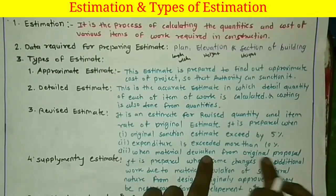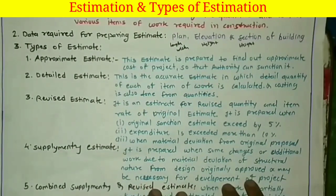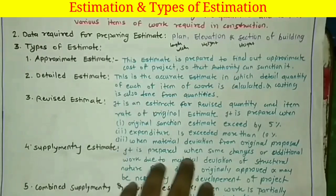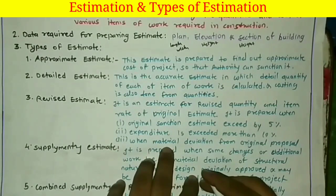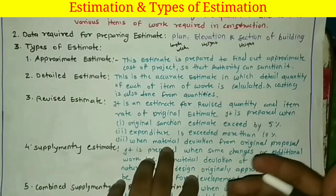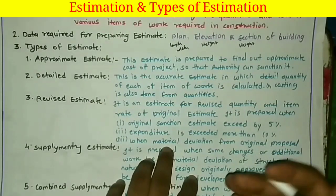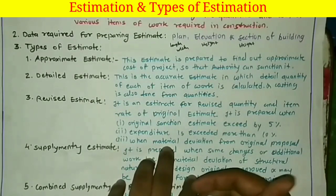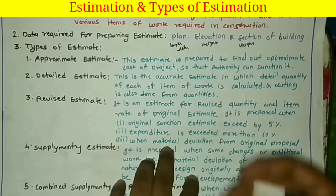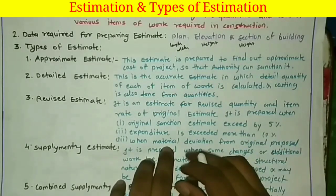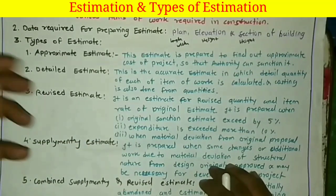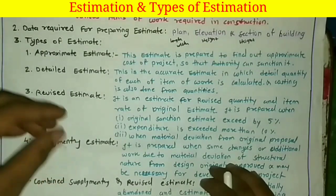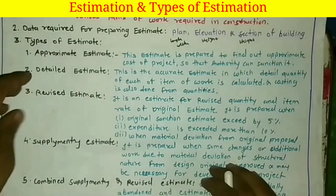The third case for a revised estimate is when there is a material deviation from the original sanction. Sometimes materials mentioned in the estimate are not available on site, which is a material variation. If the material mentioned in the estimate is cheaper and you are using a material that is available but higher in cost, you must prepare a revised estimate. So a revised estimate is prepared in these three cases. Also, if the estimated cost is more than the original cost, the revised estimate is prepared.